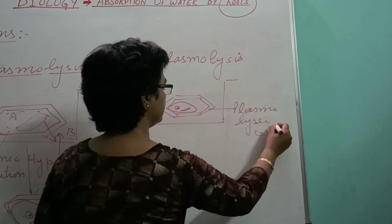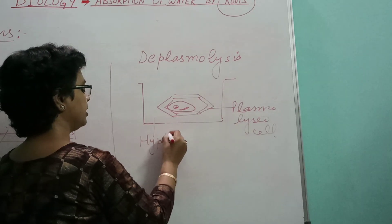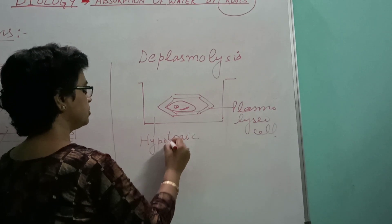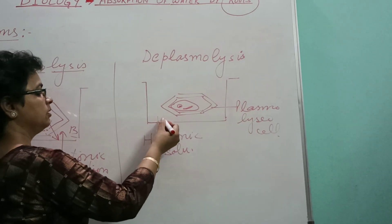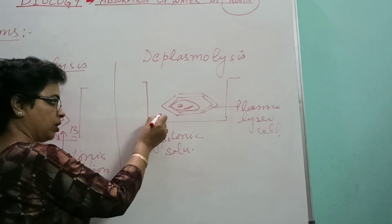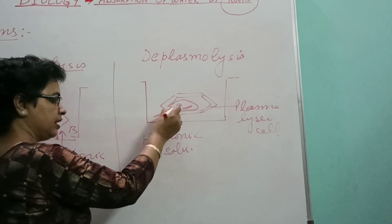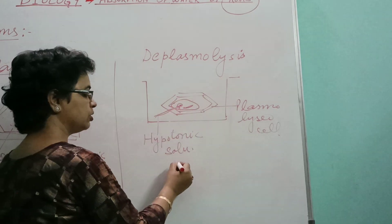When it is placed in a hypotonic solution, in that condition the water will enter inside the cell and the plasma membrane will again come to its original condition.